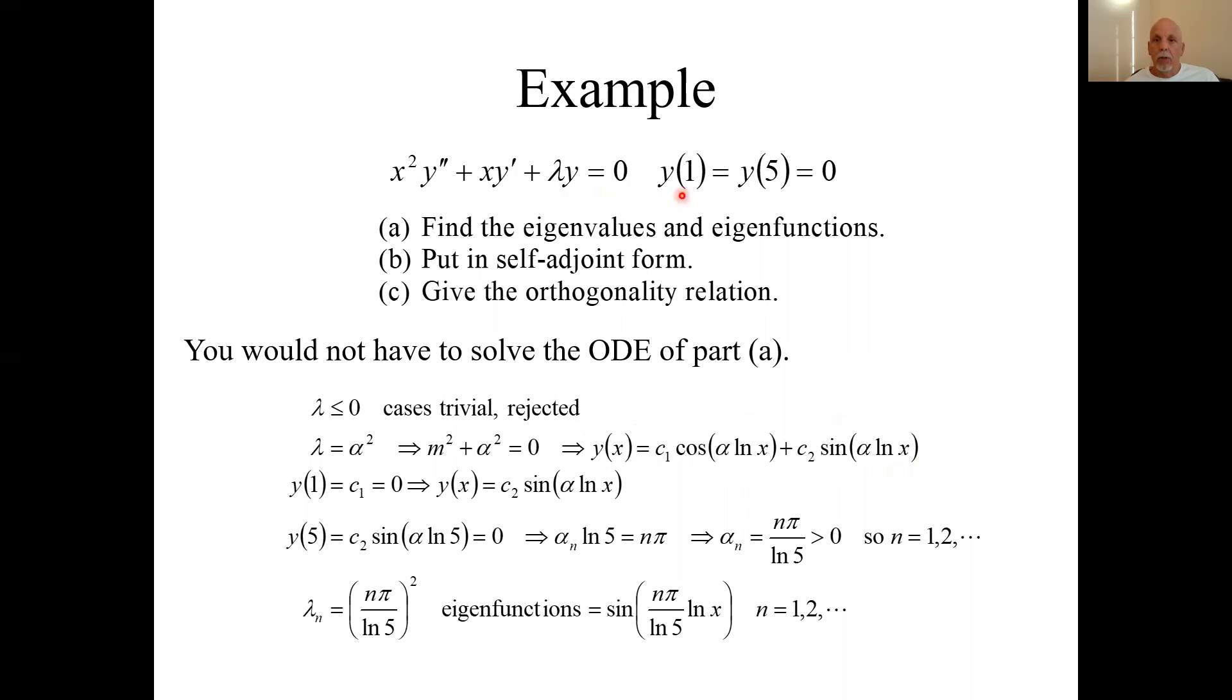And now, here's a part you should be able to do. Given this general solution, find the eigenfunctions and eigenvalues given these boundaries, so let's look at x equals 1 here. x equals 1, the natural log is 0, cosine of 0 is 1, sine of 0 is 0, so we'll have c₁ equals 0.